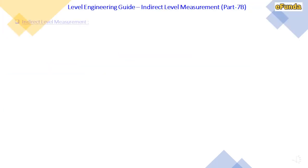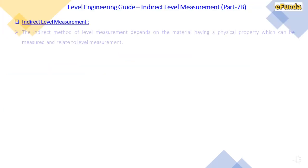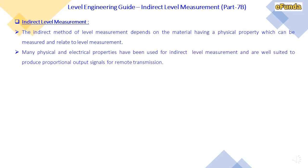The indirect method of level measurement depends on the material having a physical property which can be measured and related to level measurement. Many physical and electrical properties have been used for indirect level measurement and are well suited to produce a proportional output signal for remote transmission.